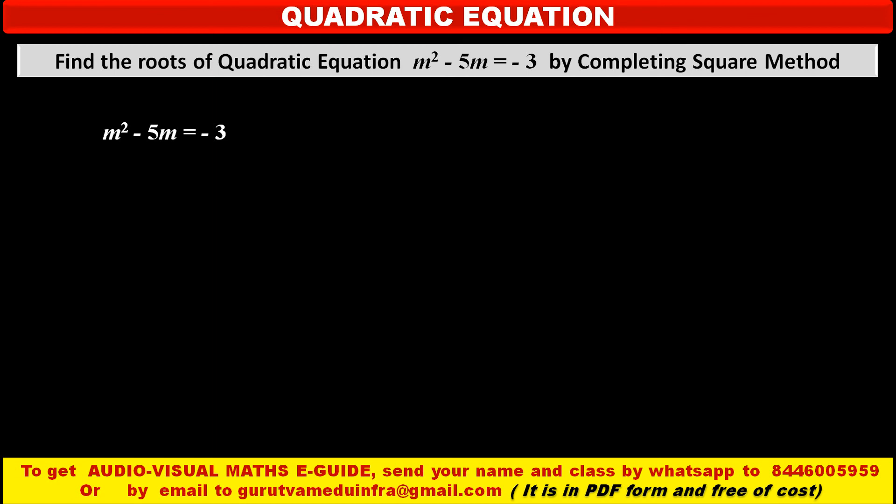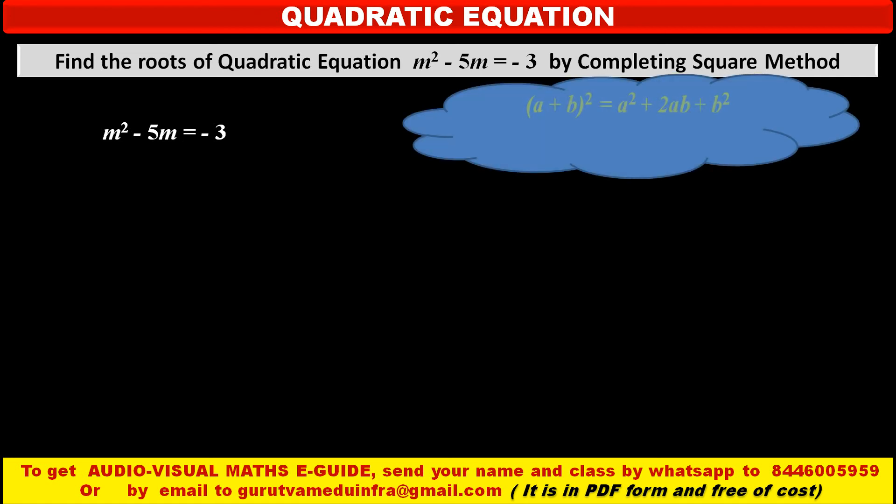To solve this equation we have to apply one identity. A plus B whole square is equal to A square plus 2AB plus B square.